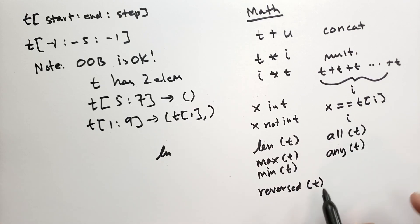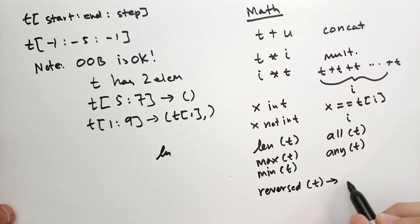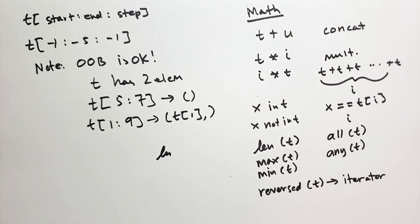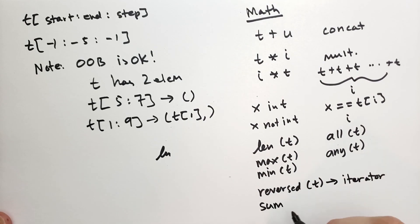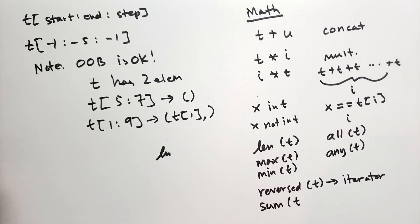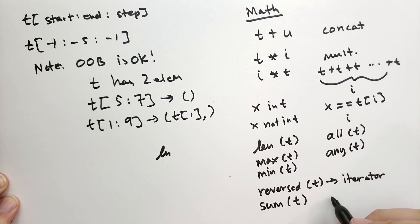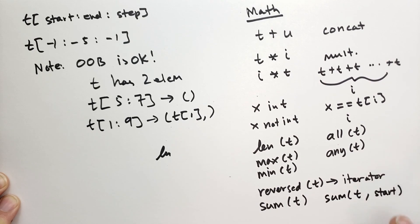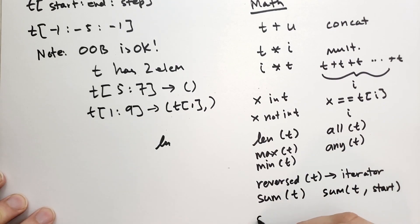I should mention here we have reversed. And reversed can take any tuple, string, bytes, or whatever. And what it returns is an iterator that goes backwards. That's pretty useful. We also have sum. And we can pass in some tuple t, a tuple of floats or whatever you want. And this will add them all together using regular addition. And we also have another version where you can take sum of t and then a starting value. And you'll start with start and then add each element of t to that starting value.